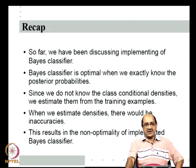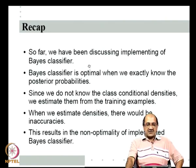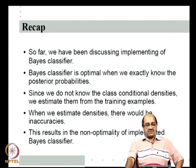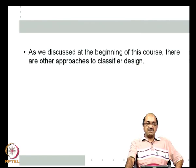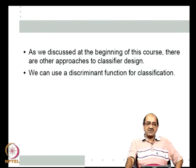We have been looking at how to implement the Bayes classifier and how to estimate densities. We considered various methods of estimating densities and how we can implement the Bayes classifier with them. Since it is a problem in general to relate how inaccuracies in density estimation affect final classification accuracy, it is often desirable to look at other techniques other than the Bayes classifier for classification. One such method, mentioned in the course overview, is discriminant function based classification.